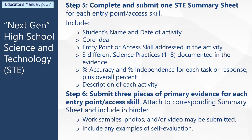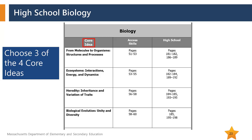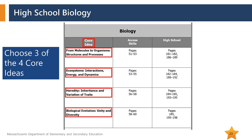You can use the same tip for high school: there are three columns with practices underneath them. If you choose one from each column, you'll have three different science practices. For high school, you can also spiral back to lower grade spans if needed. So if you're doing high school biology, you can spiral back to life science at different grades. Here's the biology resource guide showing four core ideas. I'm going to choose three: ecosystems, heredity, and biological evolution.